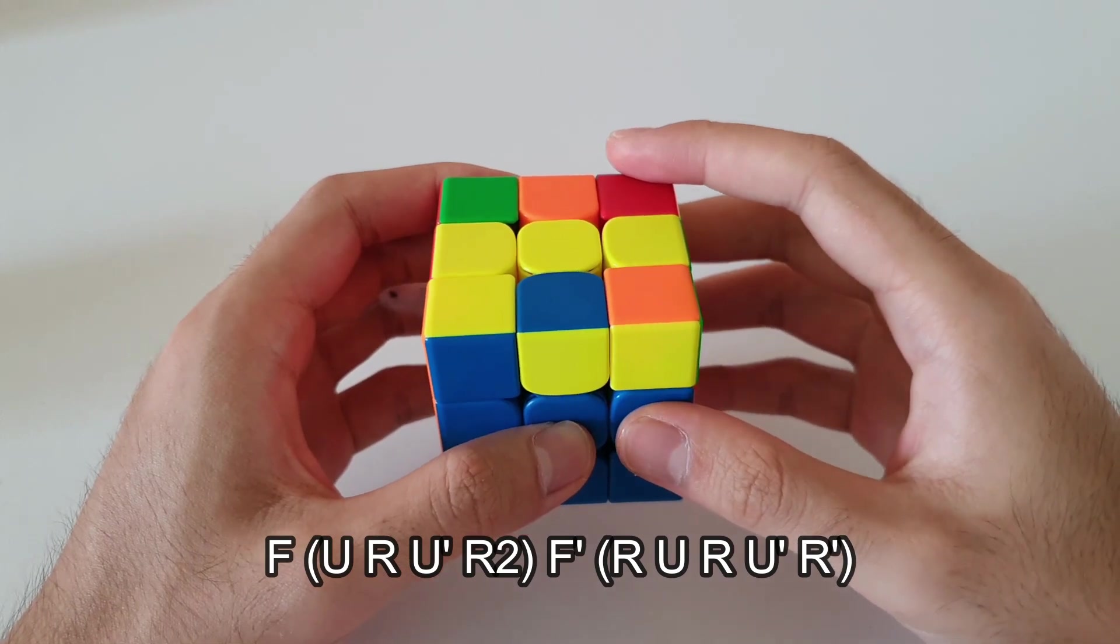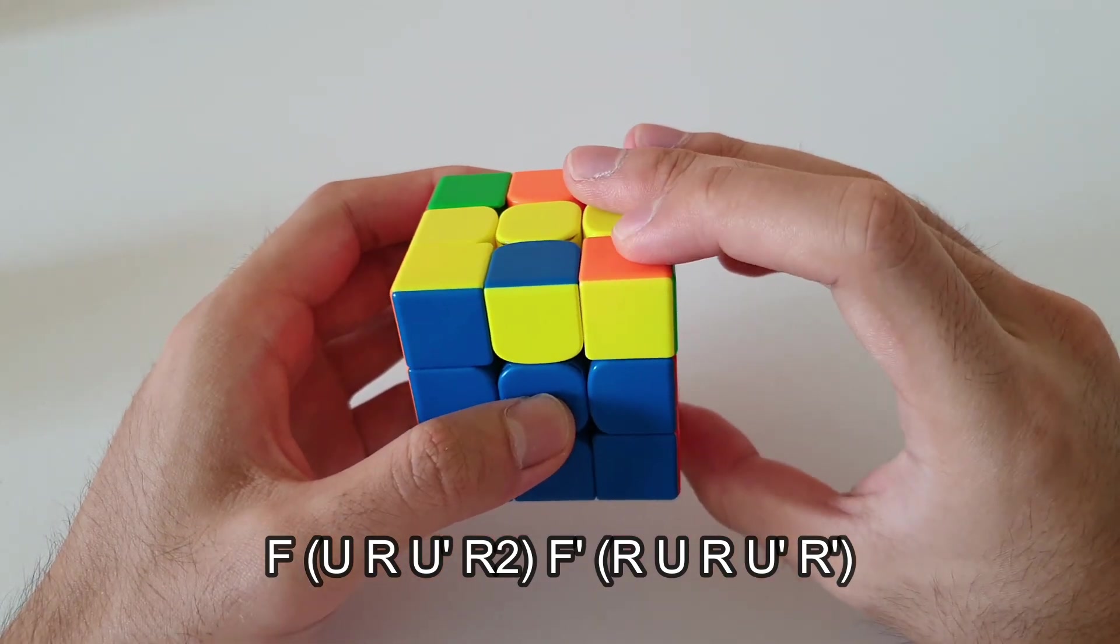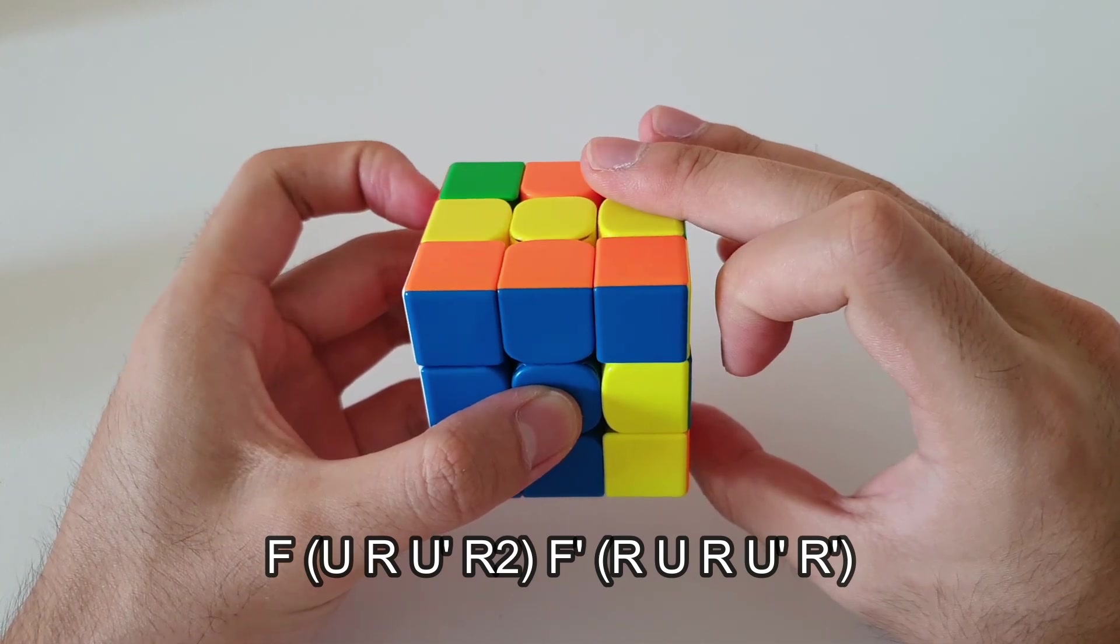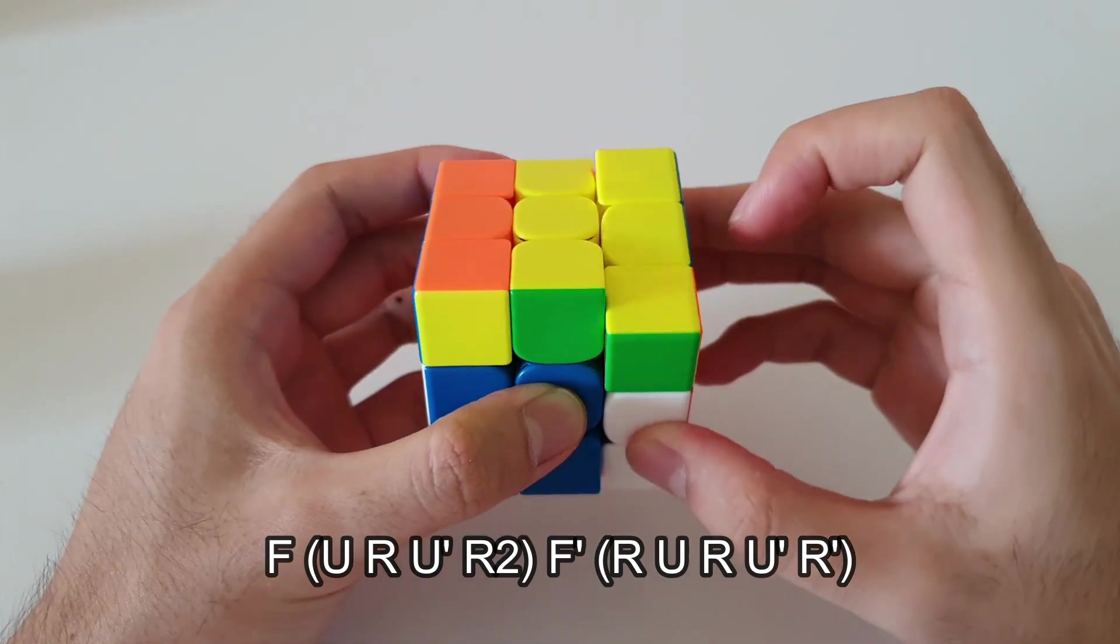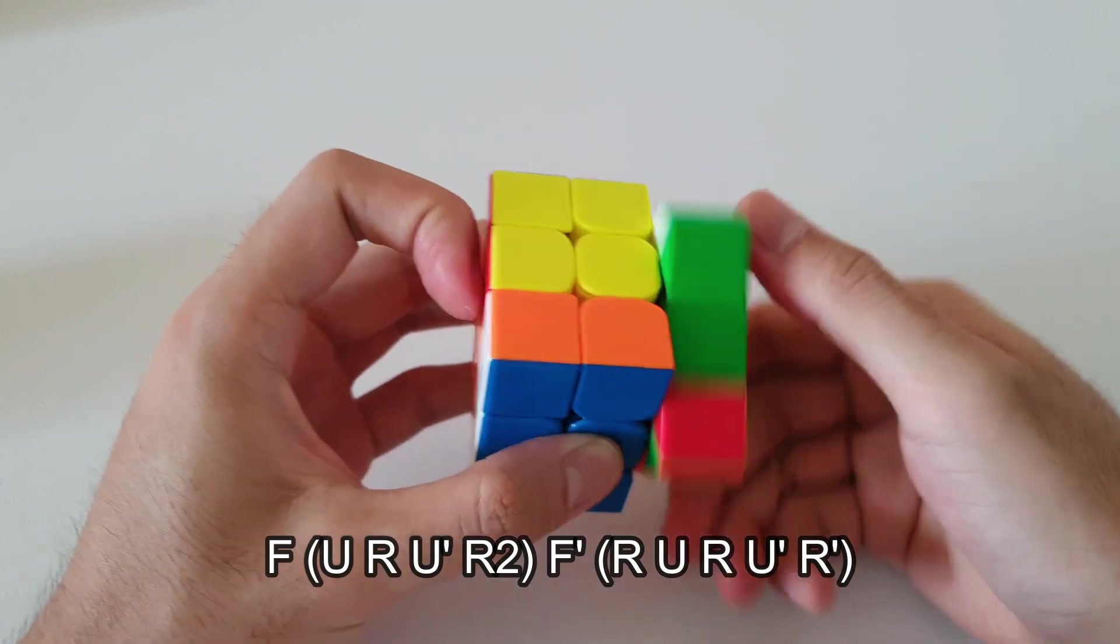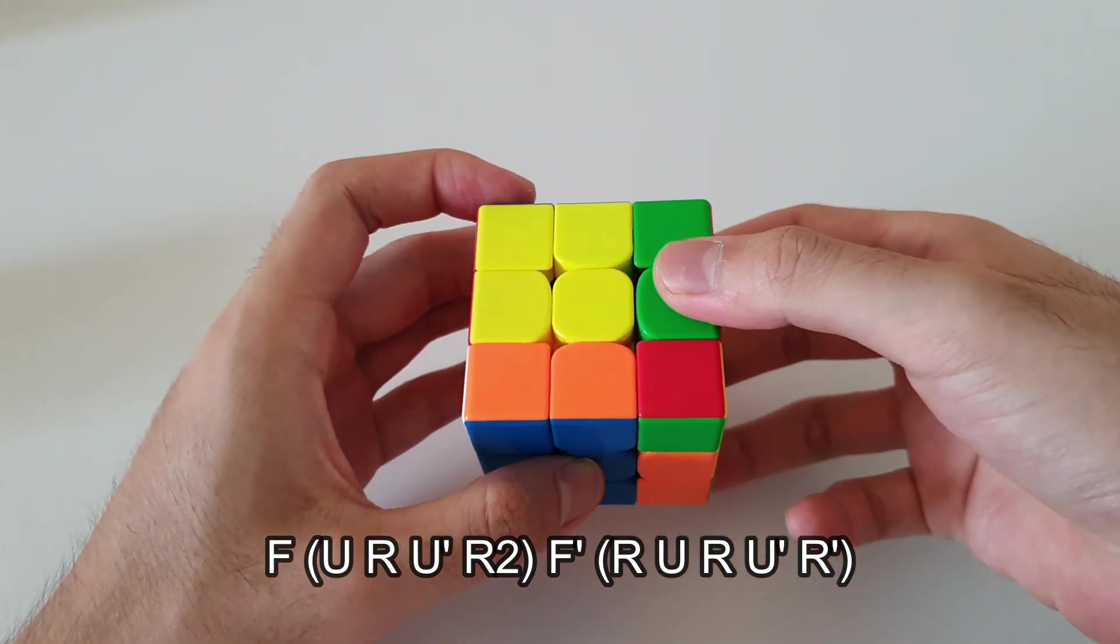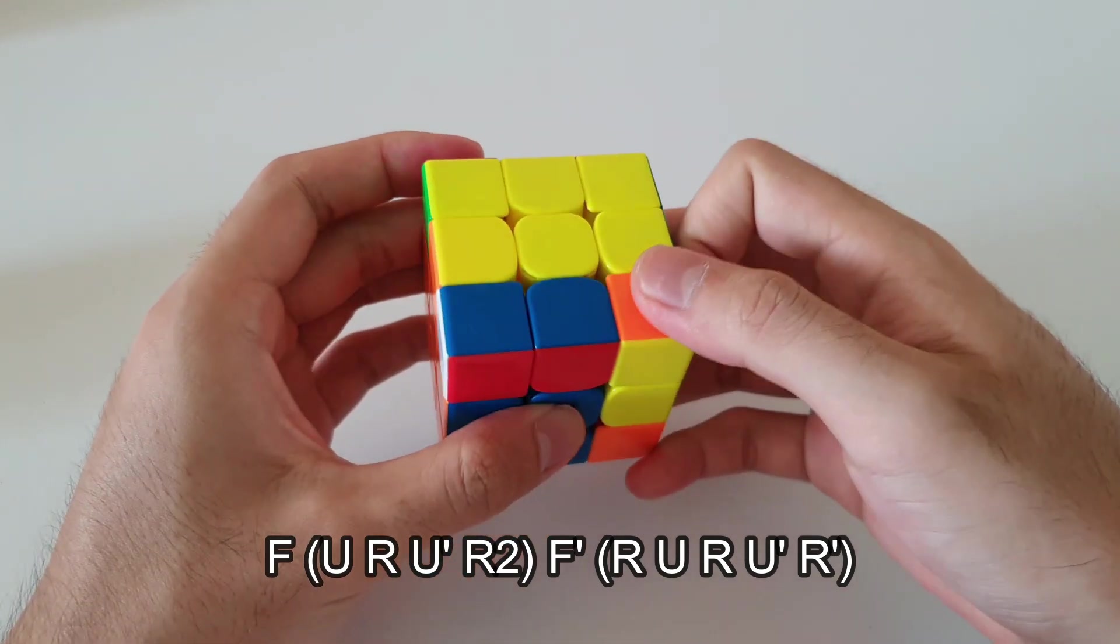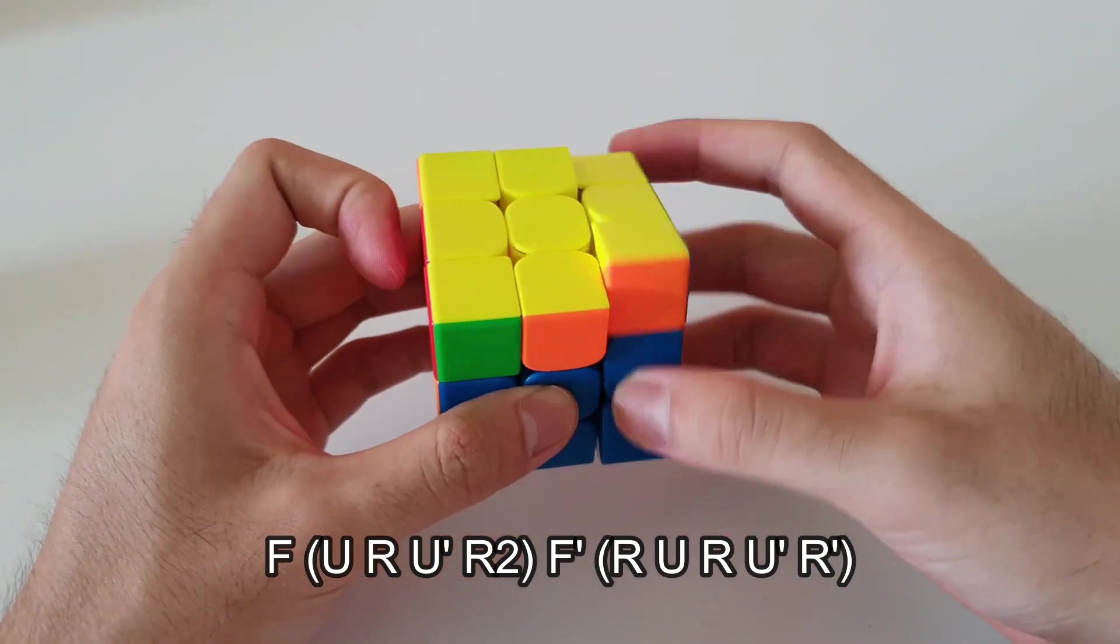The algorithm starts off with an F which I do with a bit of a re-grip here, followed by a U which you can do with your index finger pushing over like this. R U' R2 followed by F' which you can do with your ring finger. Following that R U R U' R'.